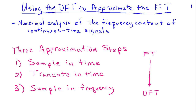If we start with a continuous-time signal that has a Fourier transform and we want to analyze that data numerically, we have to take some steps to convert it to a form we can analyze. There are three steps we're going to talk about in this lecture.